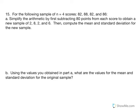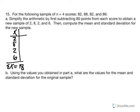Then compute the mean and the standard deviation for the new sample. I'm going to set up my scores of 2, 8, 2, and 6. To calculate the mean, I need to take the sum of my x values. If I add 2 and 8, that's 10, plus 2 is 12, plus 6 equals 18. The mean is equal to the sum of x over n. The sum of x is equal to 18, I have 4 scores, and so my mean is 18 divided by 4, which gives me 4.5.